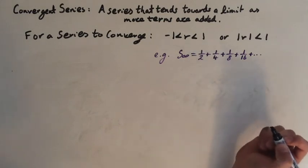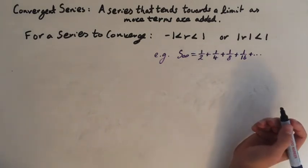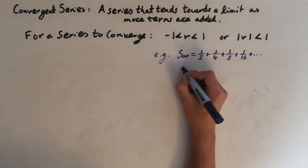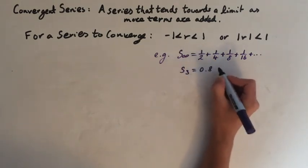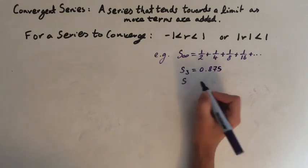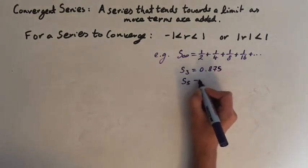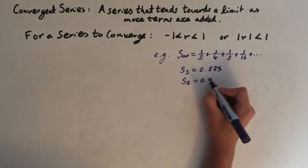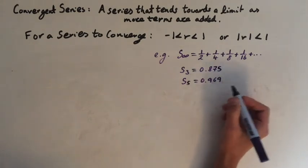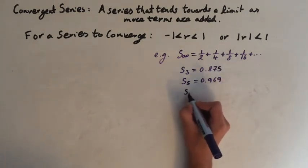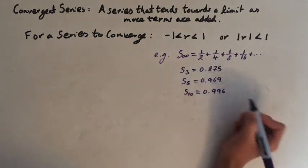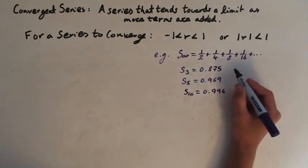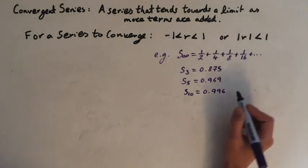I'm going to plug in some values into my calculator to get an idea of what this is going to converge to. So when you add the first three terms you get 0.875. Add the first five terms you get 0.969. This is rounded. And when you add the first ten terms you get 0.996. So hopefully you can see that this series is converging towards a limit and that limit is 1.